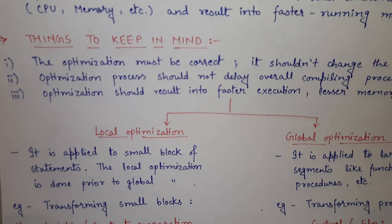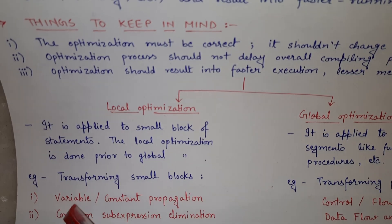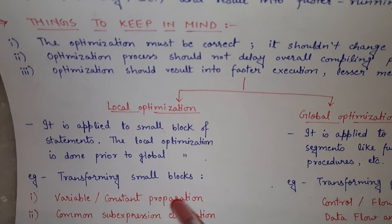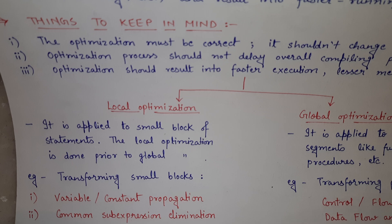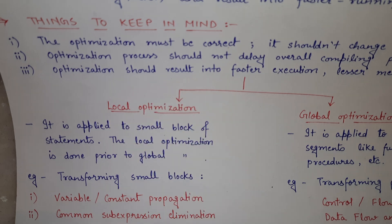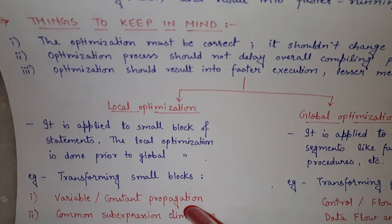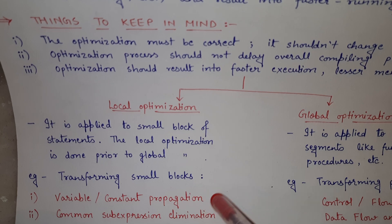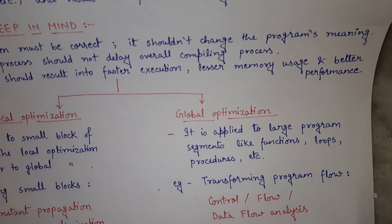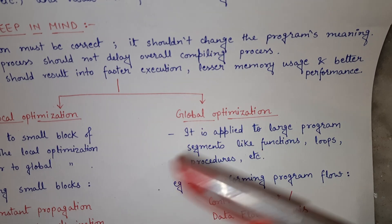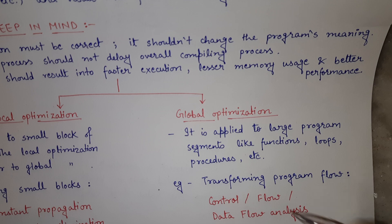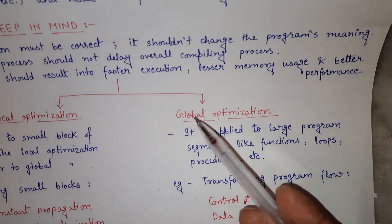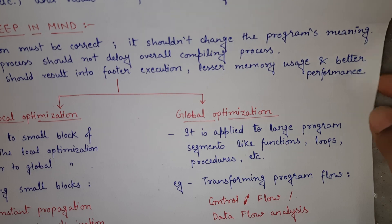The techniques used for local optimization are variable or constant propagation, and common sub-expression elimination. For global optimization, the technique used is control flow analysis or data flow analysis, which is one of the important techniques that can be applied for performing global optimization on our code.